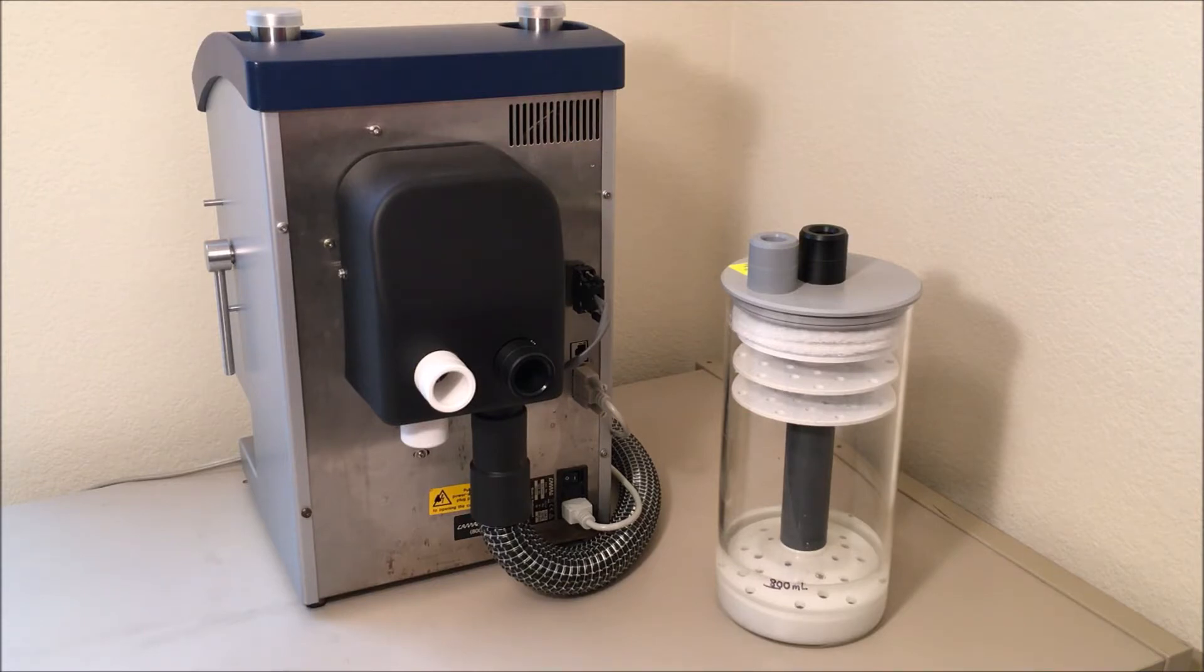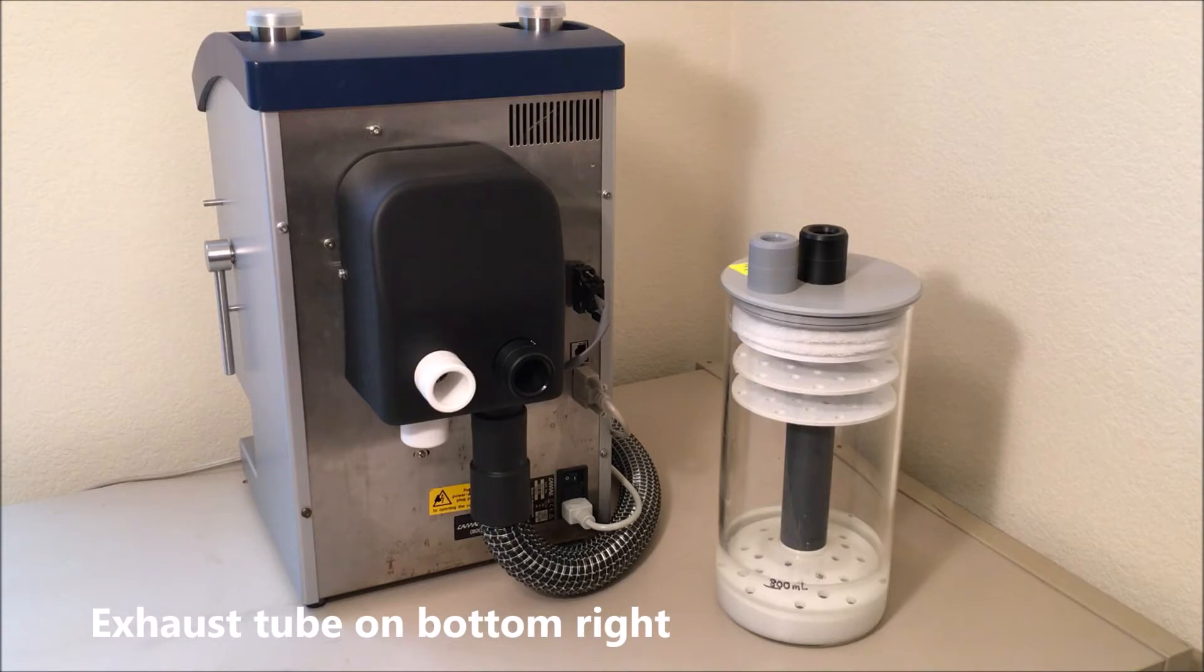First of all, as you can see I have the back of the ADC tube facing us and the tube that is coming down from the humidity control module is actually the exhaust tube. So it goes on the right side on the bottom.